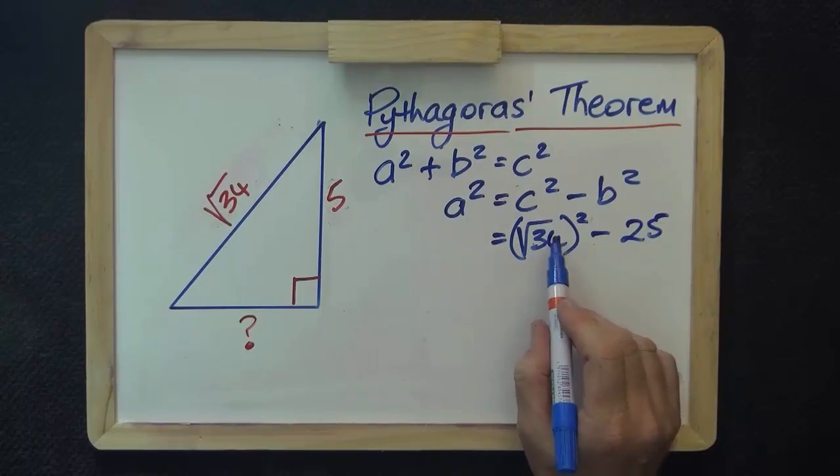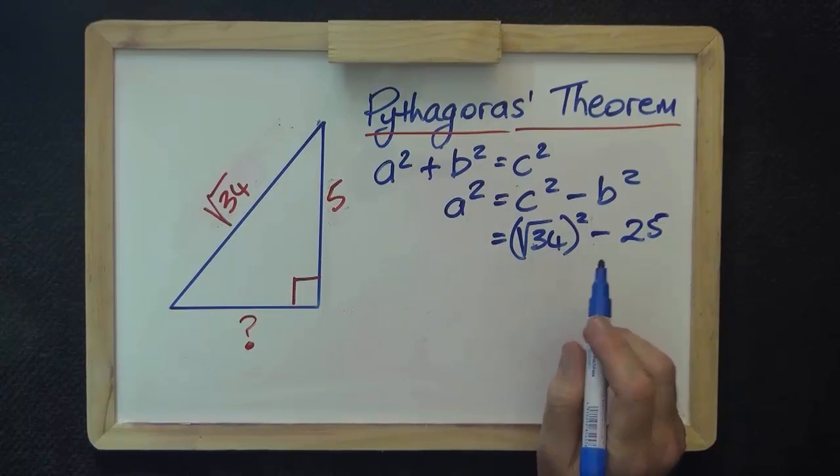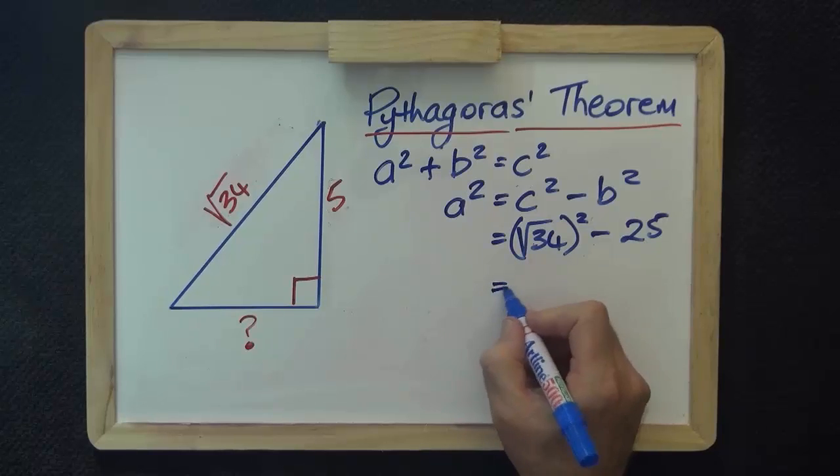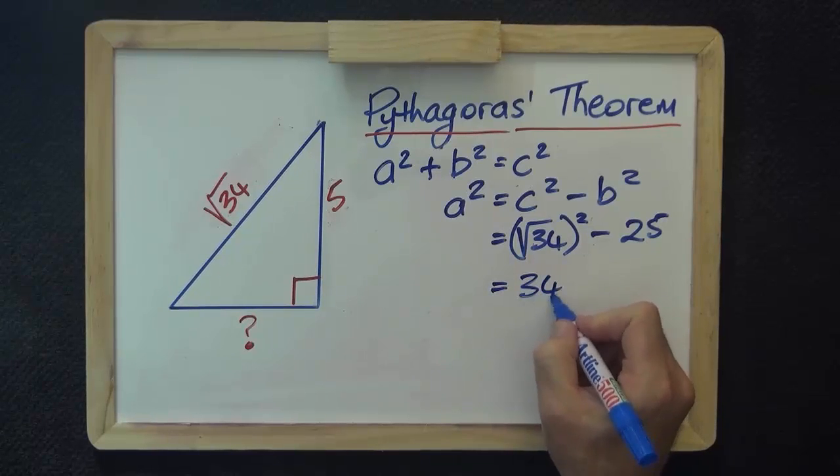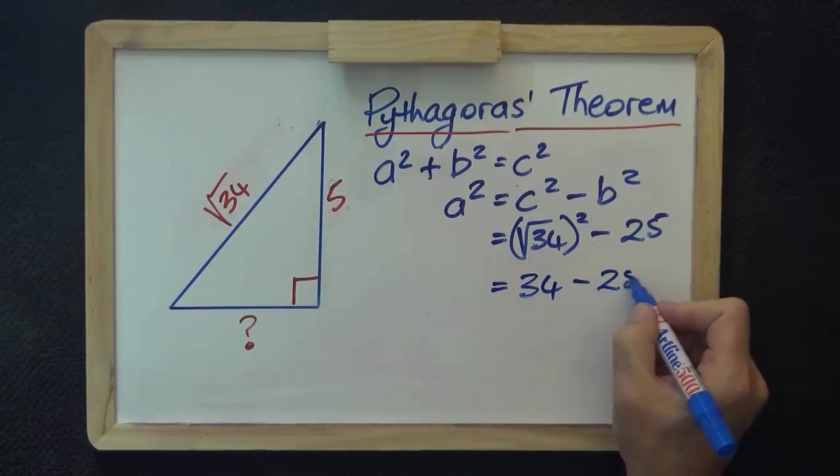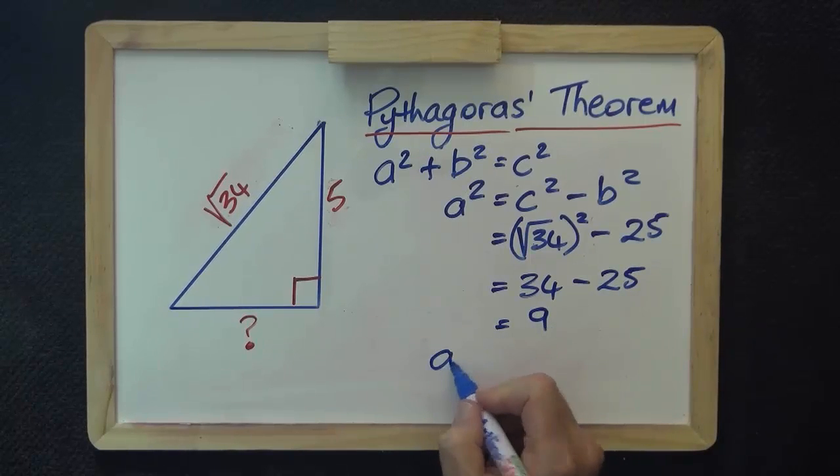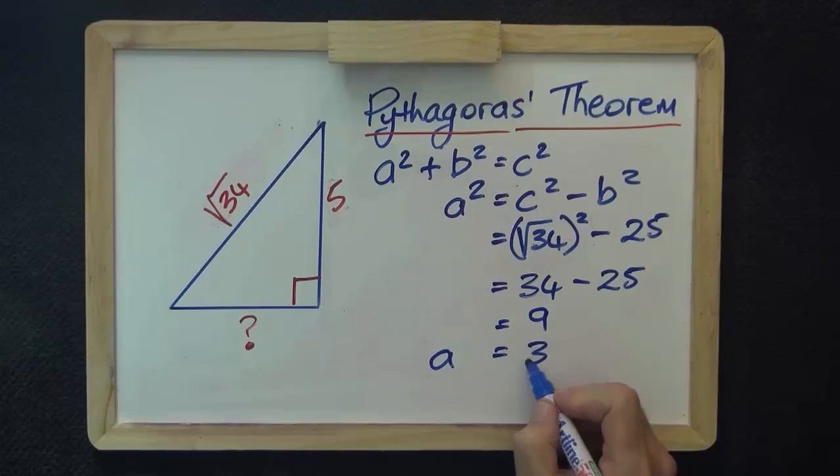Now, root 34 squared, you'll remember from your rules of indices, the square root of a squared is the absolute value of a equals 9. So a equals 3.